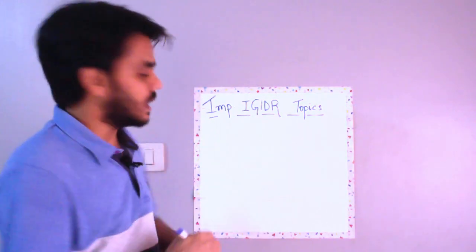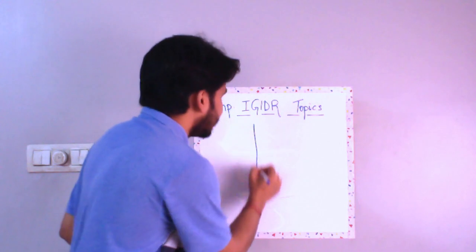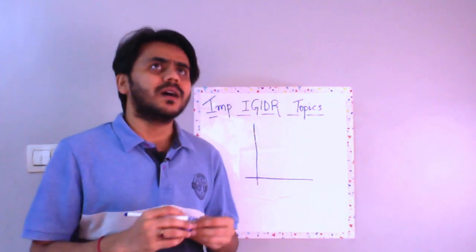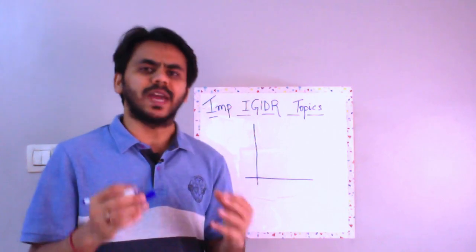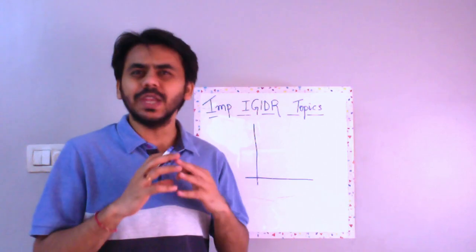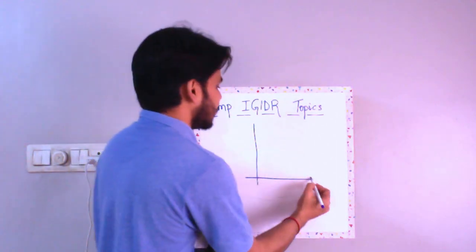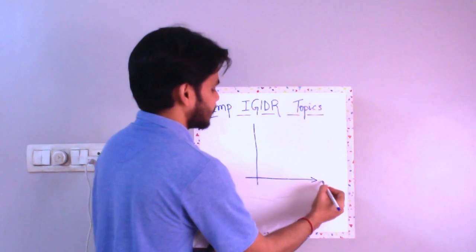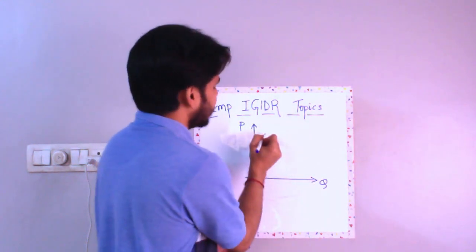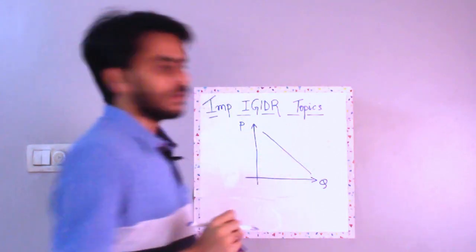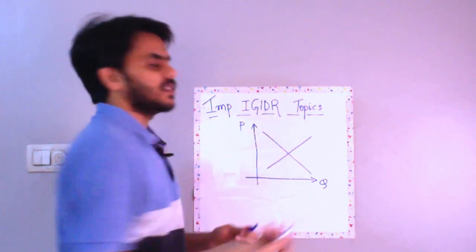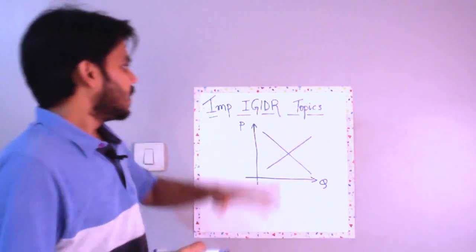First which I would pick is your supply and demand based questions. Now, why are they important? Because I would say there are 4-5 easy questions based on supply and demand and they come very often. So let's say I take this as my quantity and this as my price. Definitely this will be your demand curve and this will be your supply curve. Now, the intersection is your equilibrium. You must be already knowing that.